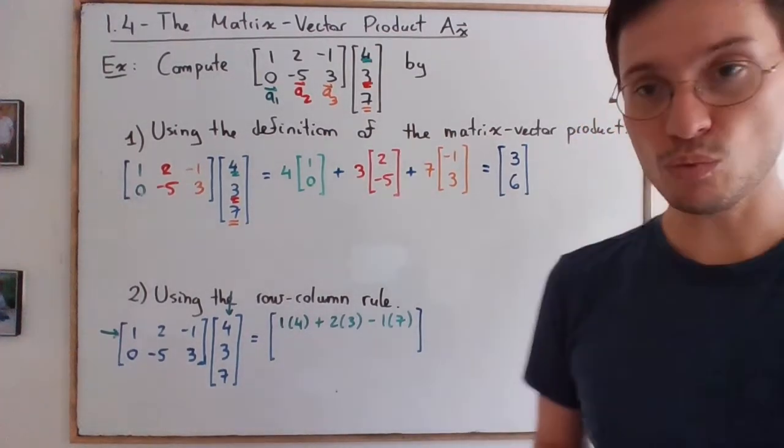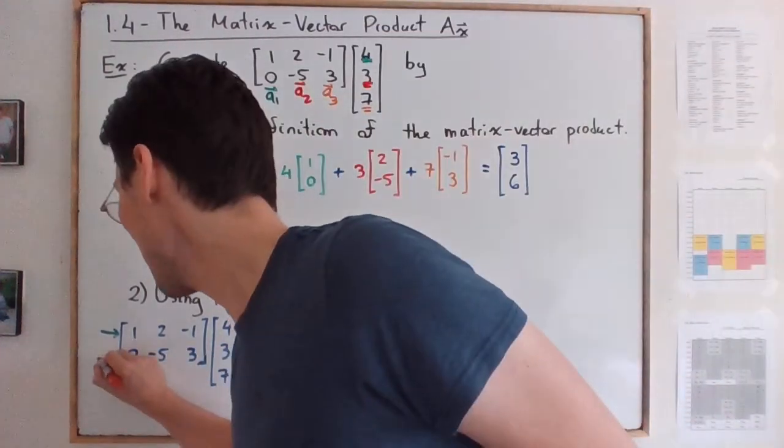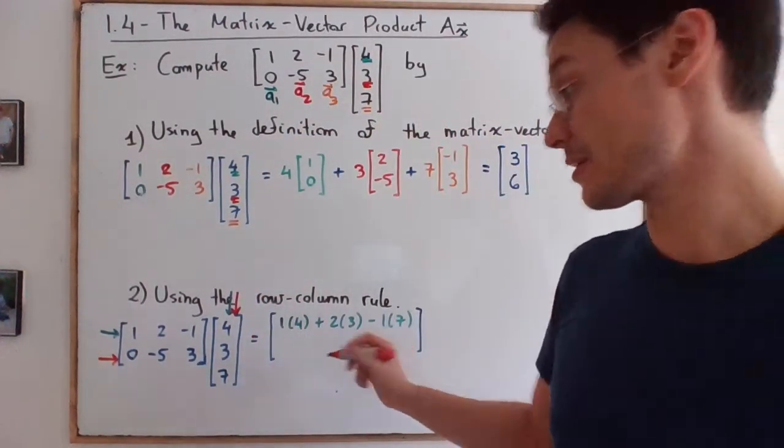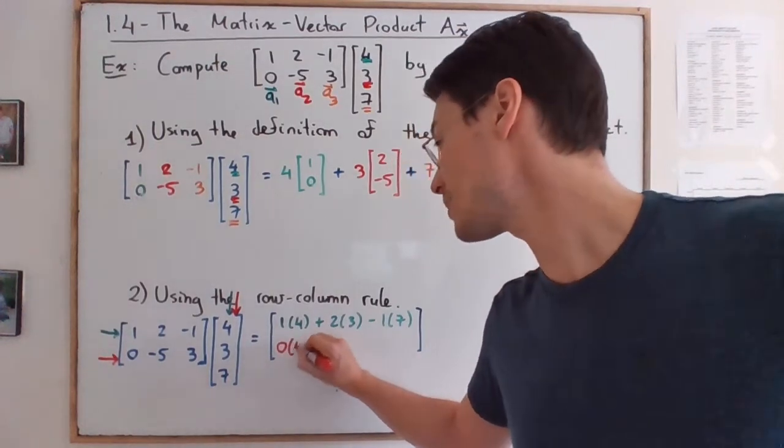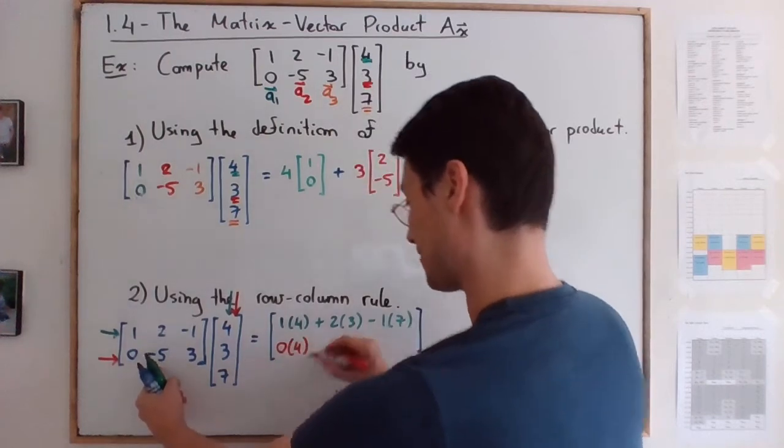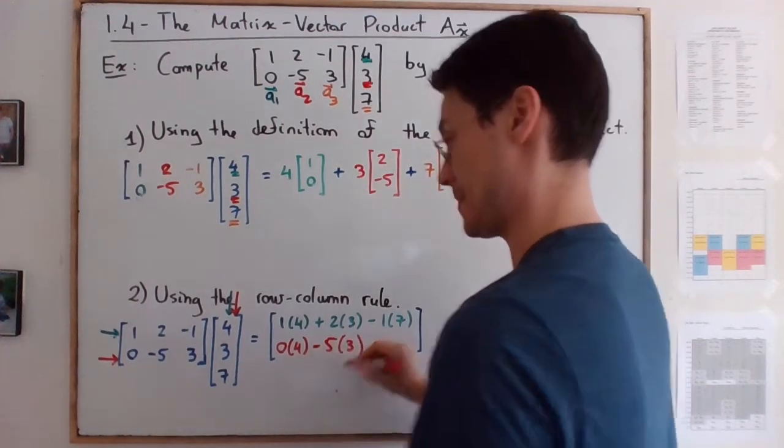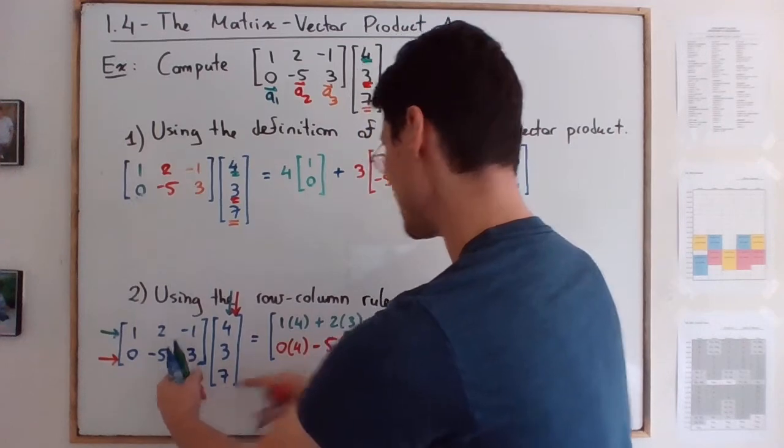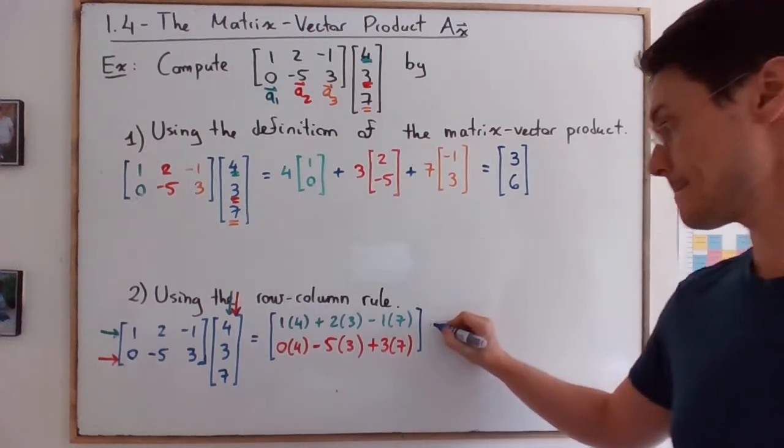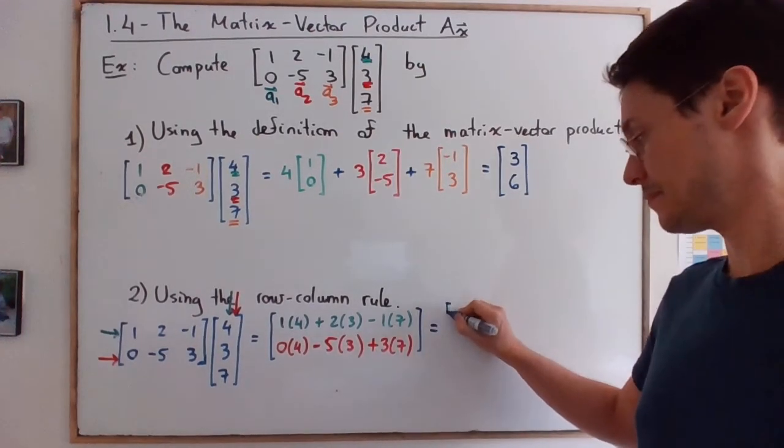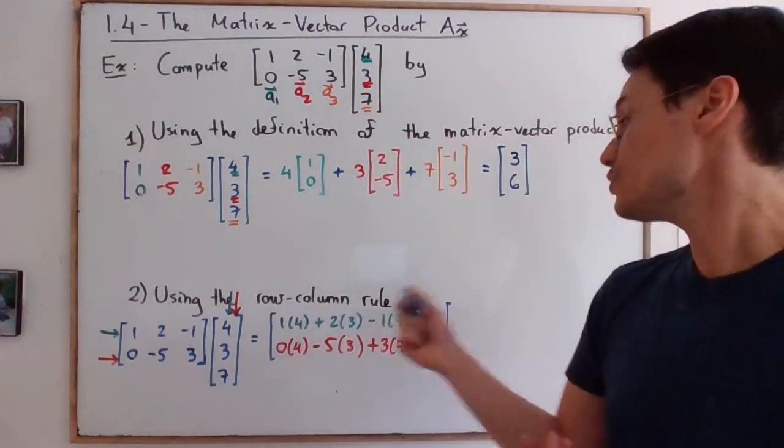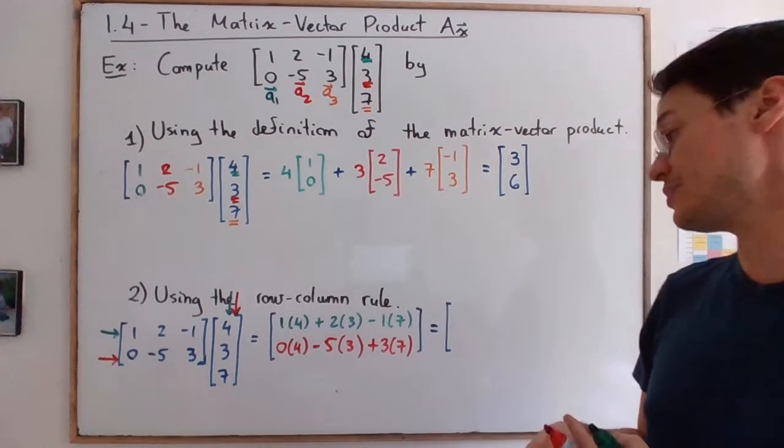And then to get the second row, which I will highlight in red this time, you take the second row of A, and you also multiply by the numbers that are over here. So it's going to be 0 times 4, these two together, then negative 5 times 3 plus 3 times 7.